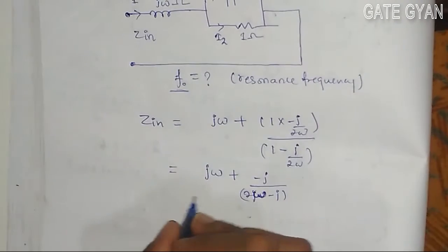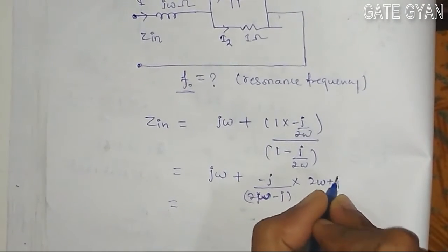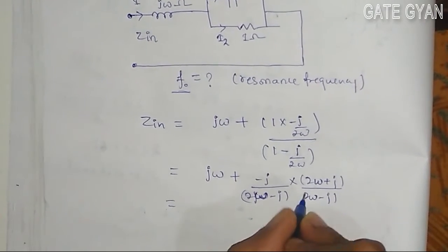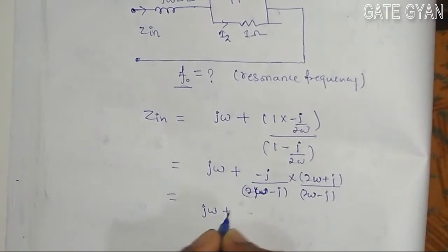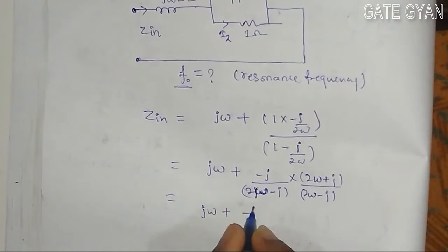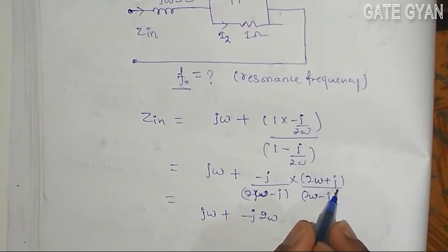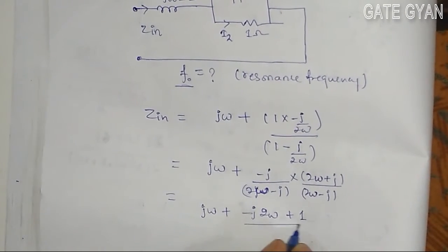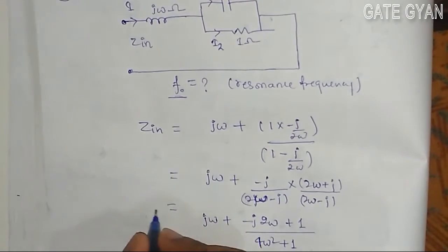And when I will rationalize this term, it is going to be 2 omega plus j upon 2 omega minus j. So it will become j omega plus minus j times 2 omega and minus j into minus j. So it will become j square, which becomes plus 1. This will become 4 omega square plus 1. This is my Z.